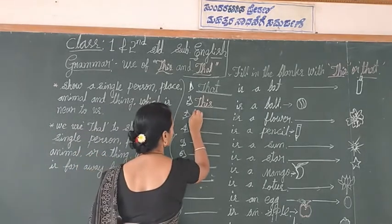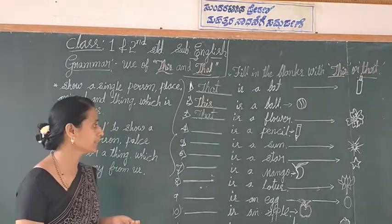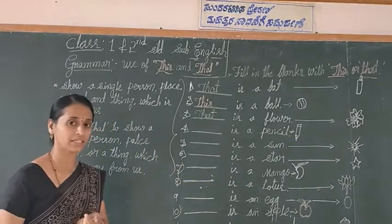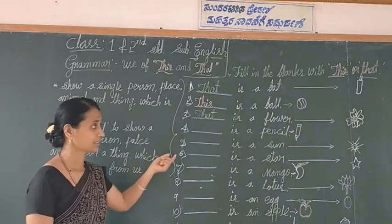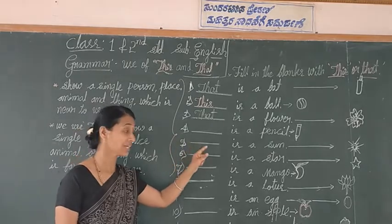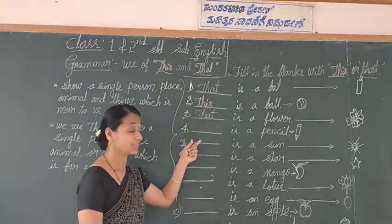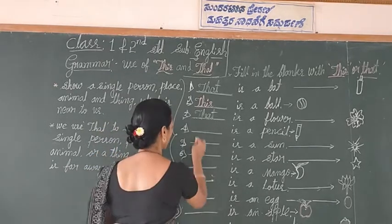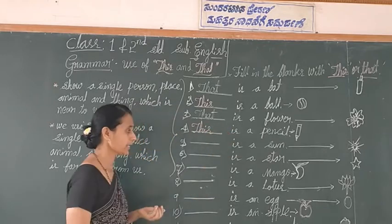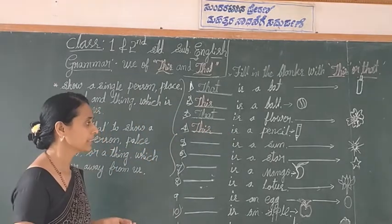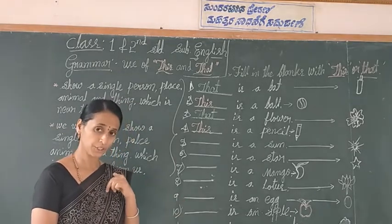Next, fourth one: dash is a pencil. What do we use — 'this' or 'that'? The pencil is near to me, so I can use 'this'. Good students. Fifth one: dash is a sun. Is the sun near to me or far away from us?